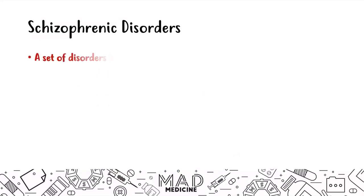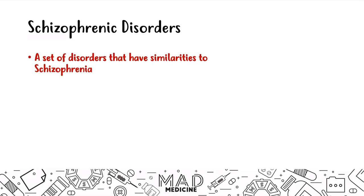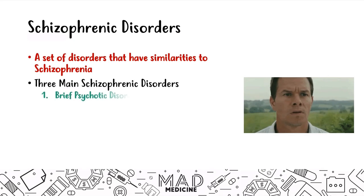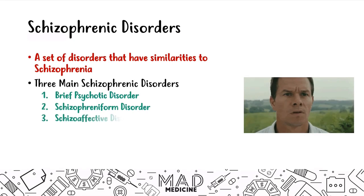Schizophrenic disorders are a set of disorders that have similarities to schizophrenia, and if you guys have watched our previous video, this video will be very easy to follow. Now, there are three main schizophrenic disorders that you should know for the USMLE Step 1. The first one is the brief psychotic disorder, the second one is schizophreniform disorder, and the third one is schizoaffective disorder.